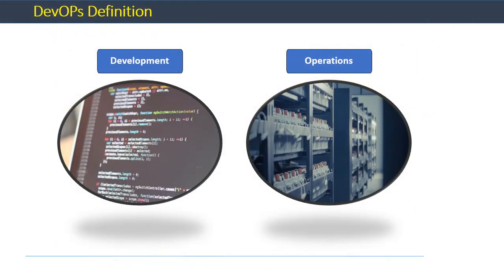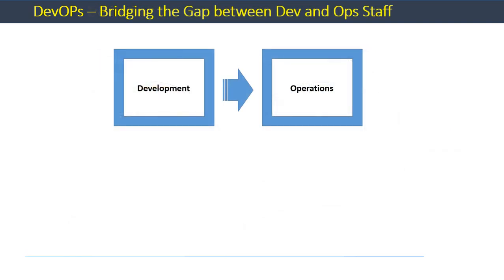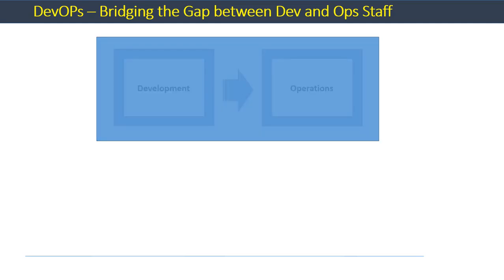So first, let's get to the definition of DevOps. What is DevOps? Let's review the concept from a number of dimensions. DevOps refers to a collection of practices and a general philosophy in the area of software development, the overall goal of which is to constantly deliver and deploy high quality software at high velocities. So it's not one practice or a methodology, but usually a collection of various practices and methodologies.